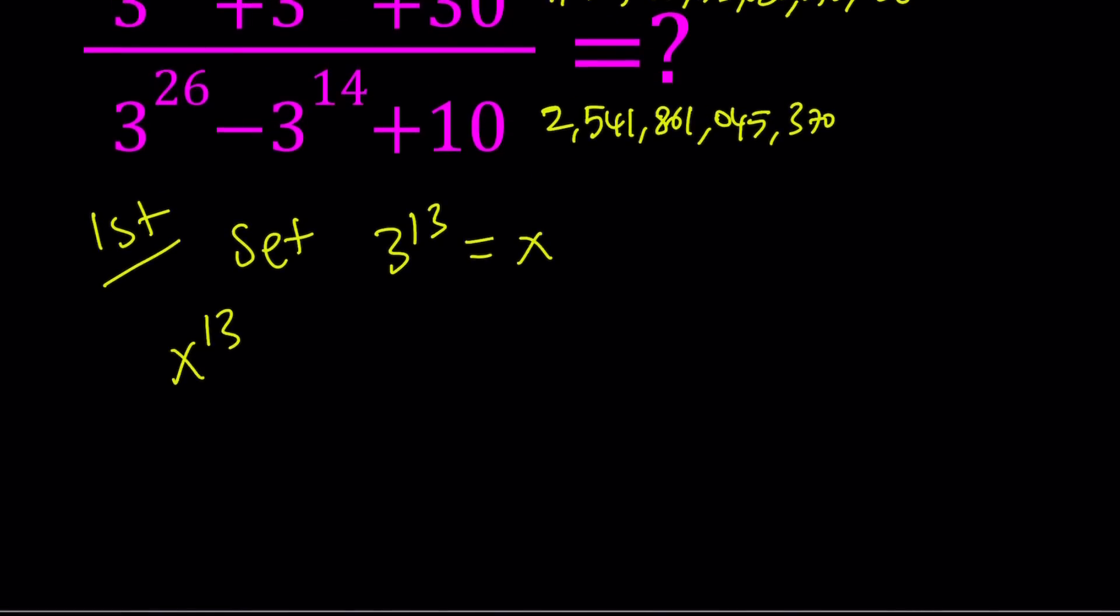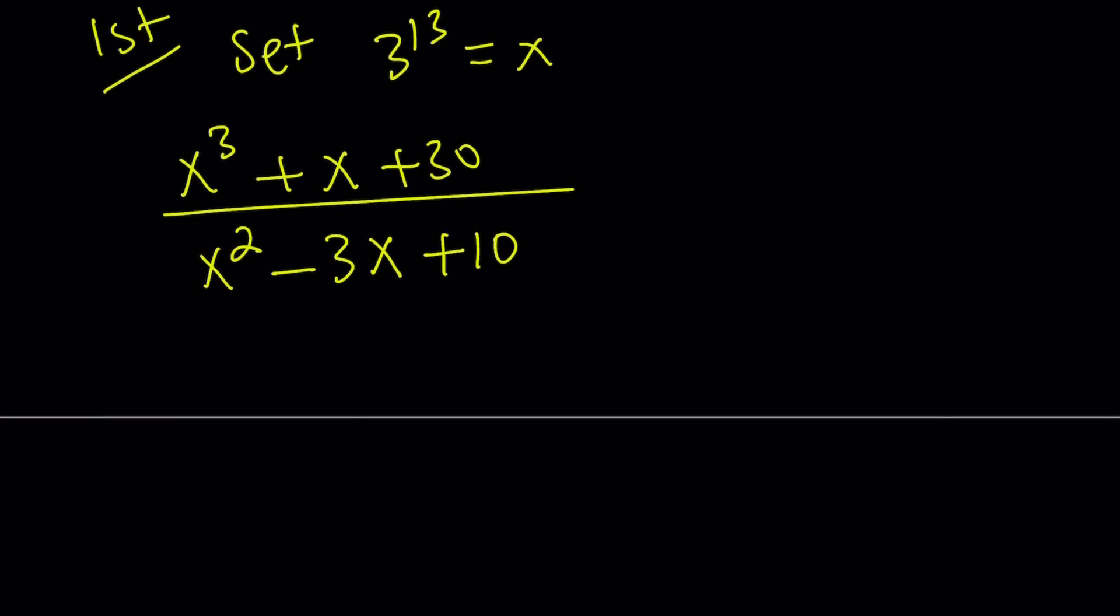x to the power of 3, because 39 is 3 times 13, plus x itself, plus 30. And the bottom one is going to be x squared, because 26 is 2 times 13, minus, now this is the critical part, 3 times 3 to the power of 13. Therefore, we can write it as 3x, and finally plus 10. Of course, there's no guarantee that this is going to work, but we're just trying, right?